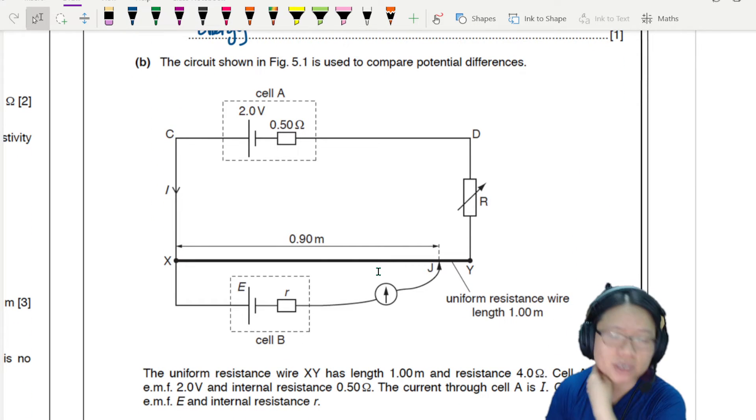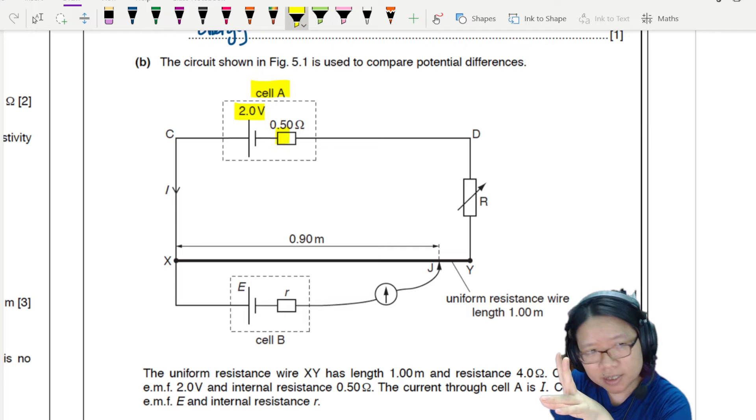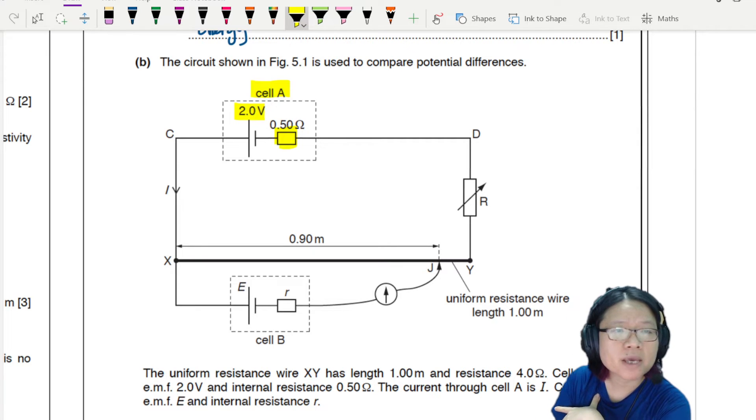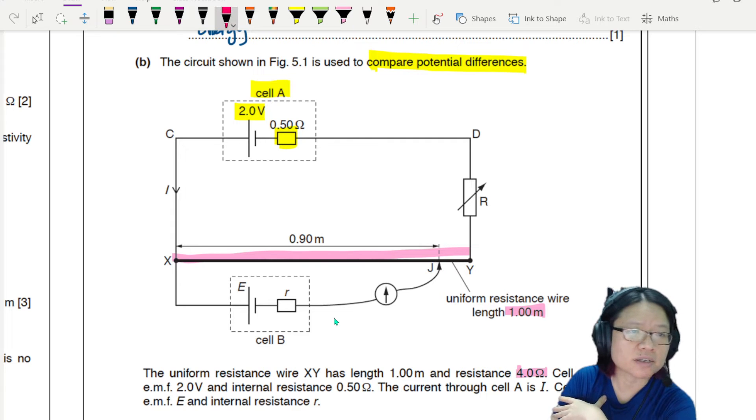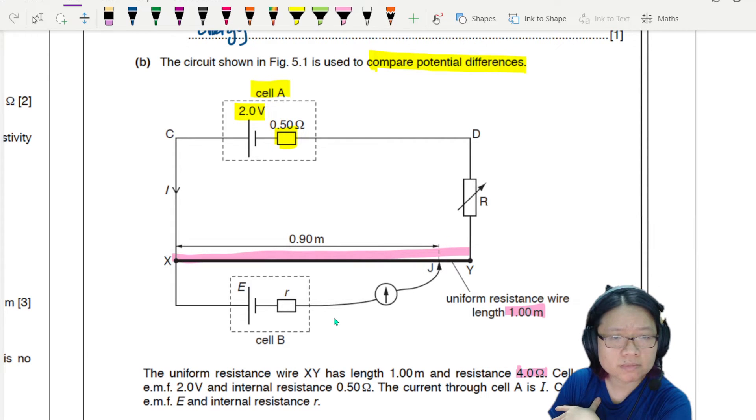So you can see a very typical potentiometer circuit, right? You have cell A, 2 volt. But the only thing atypical here is this little 0.5 ohm here. And we use to compare potential difference. The second part of the circuit is actually outside, which is the wire. We know it has a length 1 meter. And it also mentions here that it has a resistance of 4 ohm. So I'm just going to write this at the side here. 1 meter, 4 ohm.